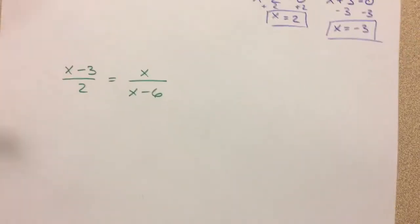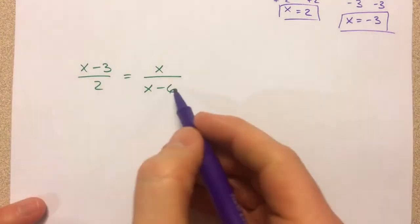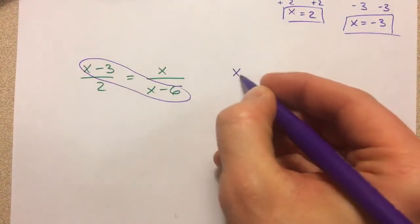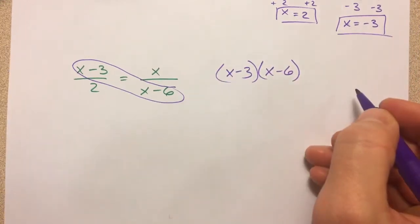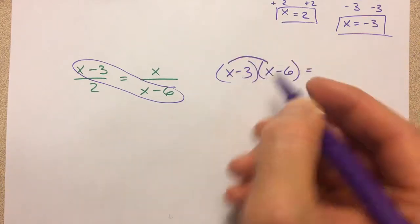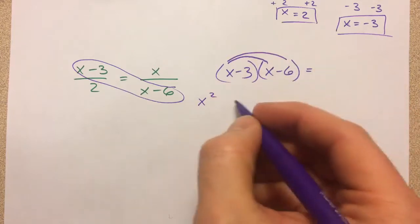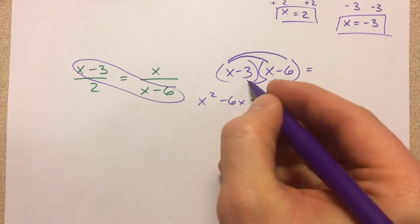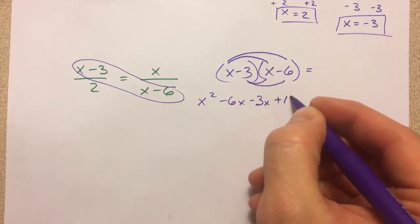And we've got x minus 3, and we're going to multiply. We're going to cross-multiply these again. So I'm going to get x minus 3 times x minus 6. And I'm putting in parentheses, just like we've been doing with the distributing, so that when I multiply x times x, I get x squared minus 6x minus 3x.